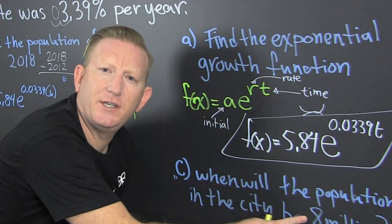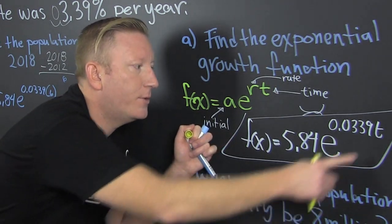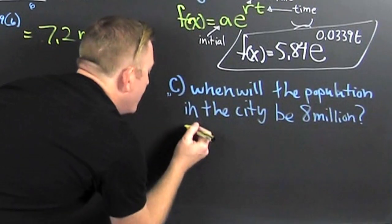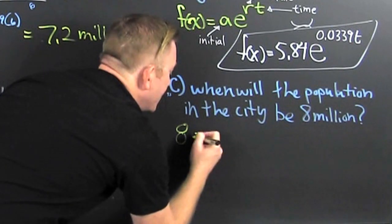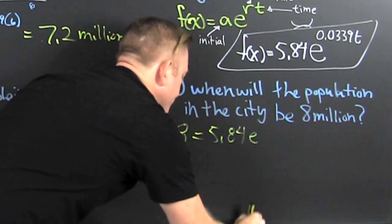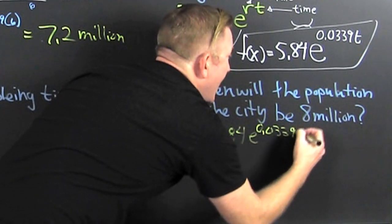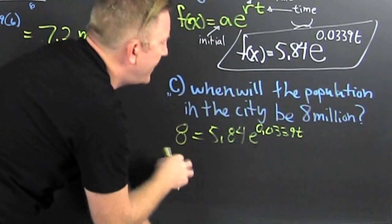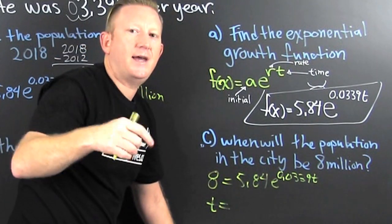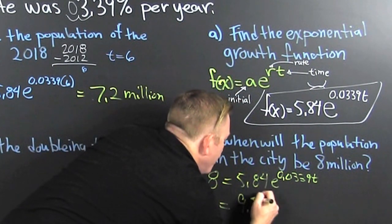Now, what are they giving you? Are they giving you a time or are they giving you a population? In this exponential function, we put in time and we get out population. They give us a population, so we're going to put it on the output side. So on the outside we have 8 million, equal to 5.84·e to the 0.0339t. We divide by 5.84, then we naturally log it, then we divide by 0.0339, and we find t. So t turns out to be 9.3 years.